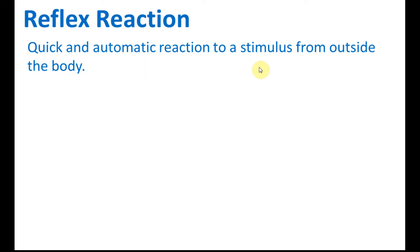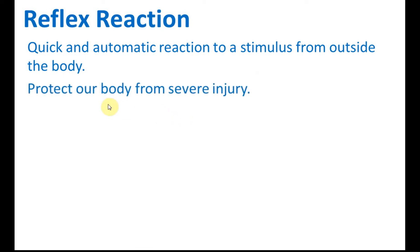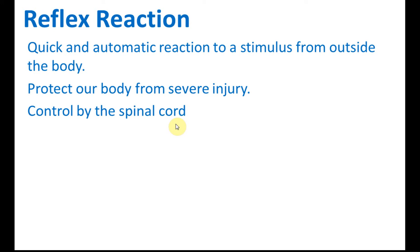You receive a stimulus and respond to it in a very short time. The aim is to protect our body from severe injury. It is controlled by the spinal cord — the impulse does not go to the brain for decision making. Instead, it goes to the spinal cord, and the spinal cord makes the decision by itself, without your consciousness.